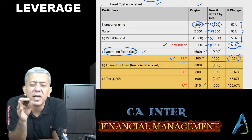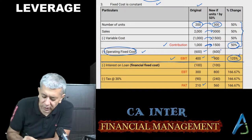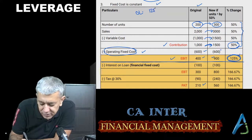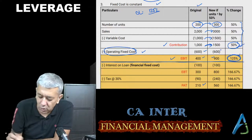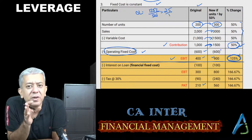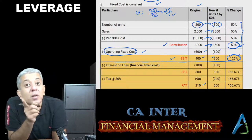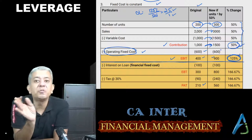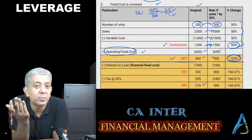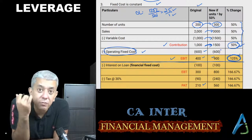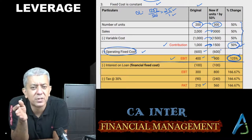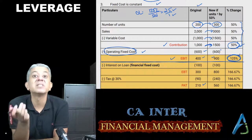So operating leverage is 2.5. This means: whenever contribution rises by 1%, due to fixed cost, your EBIT will be rising by 2.5%. That's great — agar contribution 1% se badh raha hai, I will earn EBIT to the extent of 2.5%. Lekin drawback bhi toh hai — whenever contribution will fall by 1%, even EBIT will be falling down by 2.5%. This is the risk. Toh agar badhega to bahut kamaoge, agar nahi badhega to bahut zyada lose karoge.